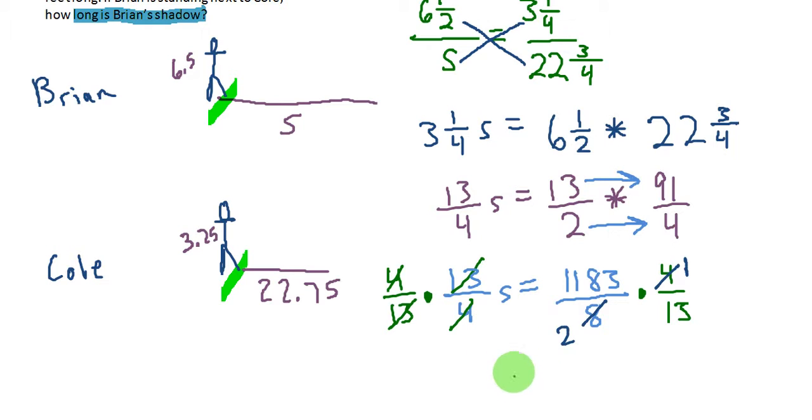And on this side of the equation, I have S is equal to 1183 times 1, which is 1183, over 2 times 13 is 26.